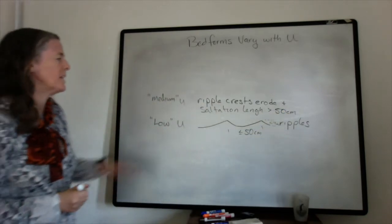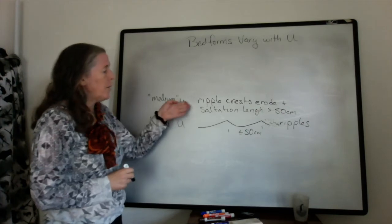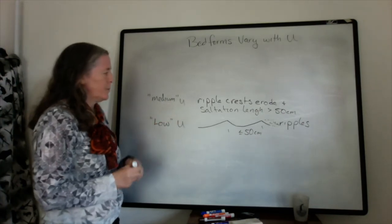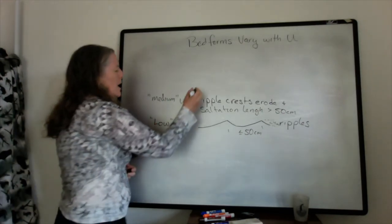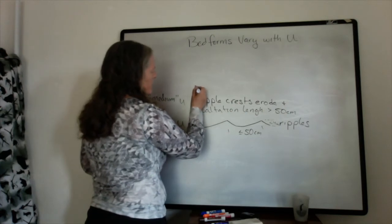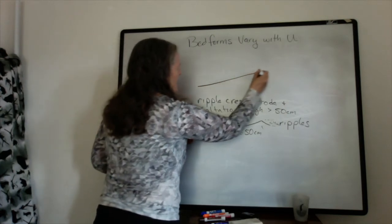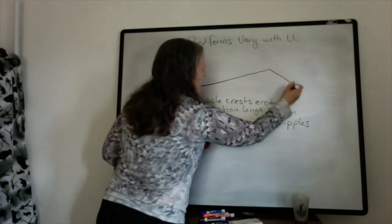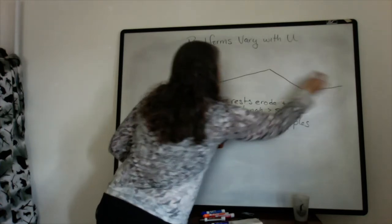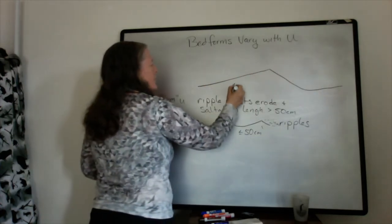Not all of them—it depends a lot on the grain size. But what happens then is that the ripples flatten out and you tend to get much larger bed forms that reflect that longer saltation length. And you get dunes.